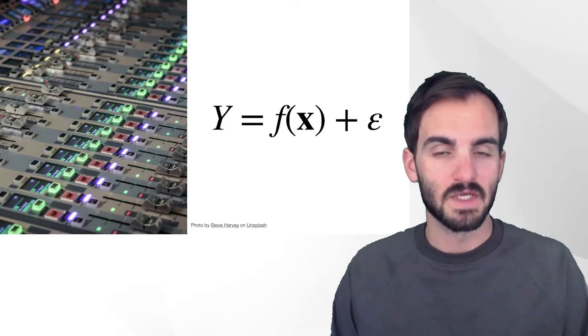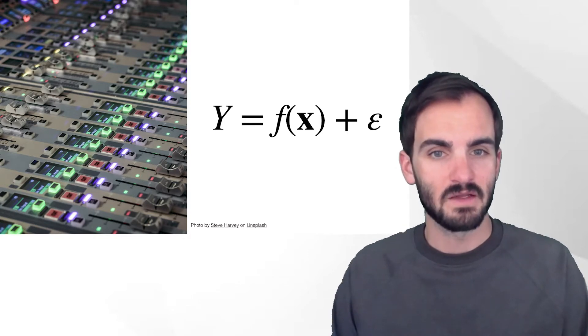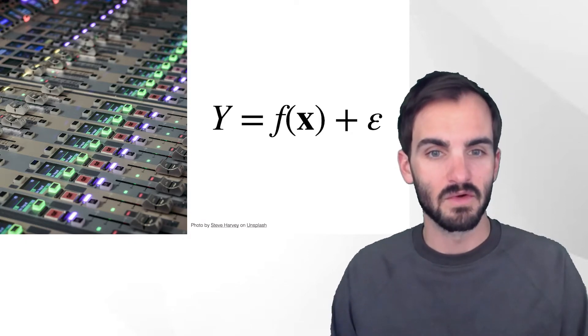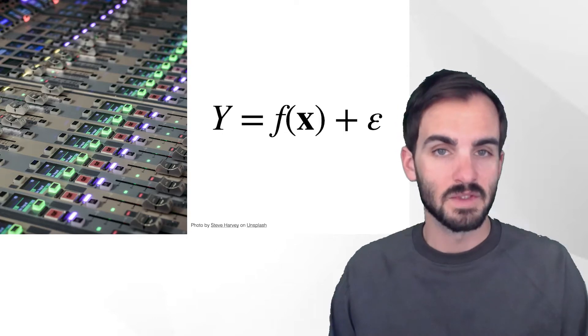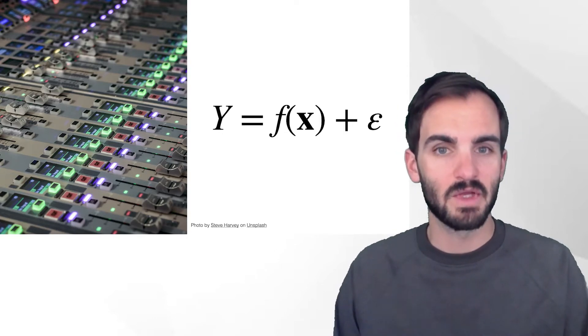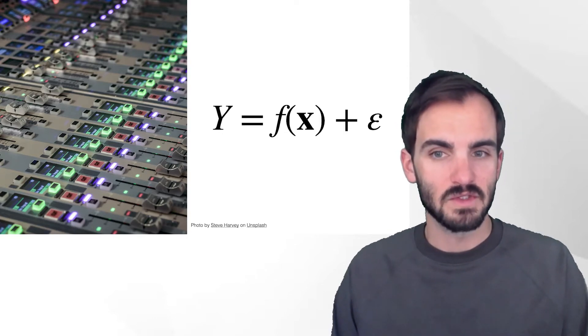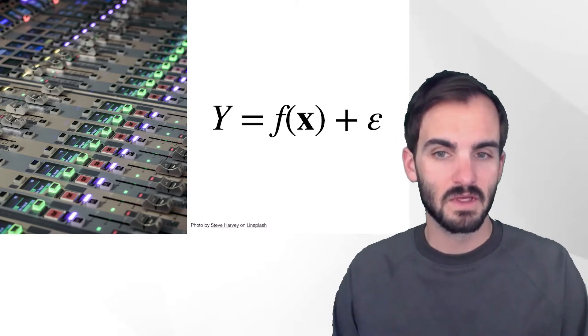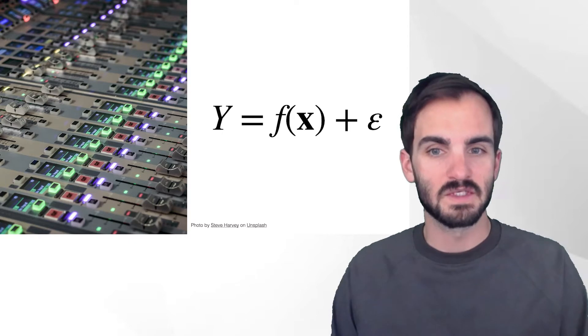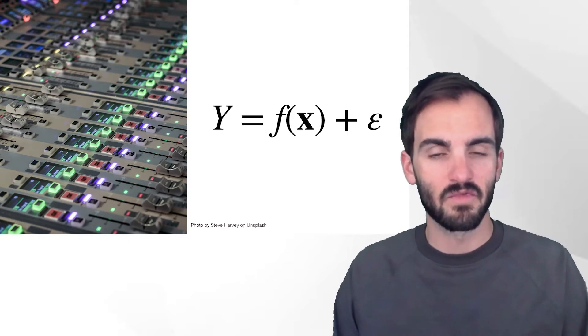So one issue that statisticians have is that they might not have control over the inputs. Now, in some cases, they do. In experimental contexts, researchers, statisticians, data scientists can control the inputs. And in course two, we'll learn a set of statistical tools that can be used to analyze data that come from this type of experimental setup.